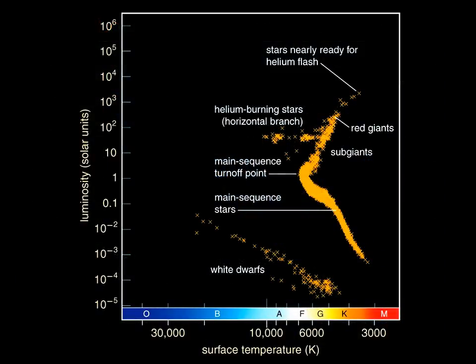We can see examples of low mass stars in all the life stages we have discussed by looking at an HR diagram of a globular cluster. We can clearly see the main sequence turnoff points, subgiants, red giants, and stars just about to have a helium flash. The stars burning helium in their cores all have about the same luminosity but different surface temperatures, tracing out a horizontal line on the HR diagram called the horizontal branch.